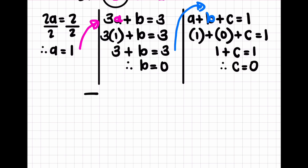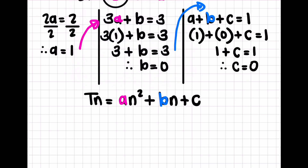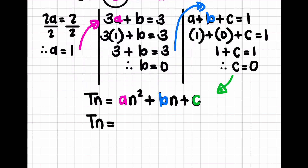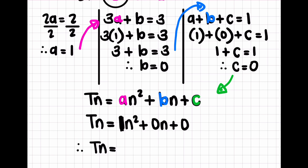The nth term of a quadratic number sequence is tn equals an squared plus bn plus c. I put in a equals 1, so 1n squared, plus b which is 0n, plus c which is also 0. Cleaning that up — we don't need to write the coefficient of 1, so we have n squared plus 0n plus 0. Leaving out the zeros, tn equals n squared.